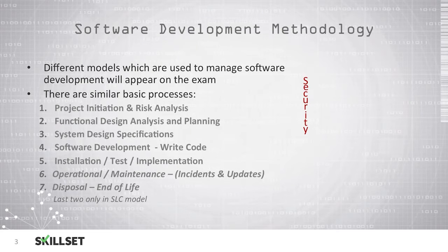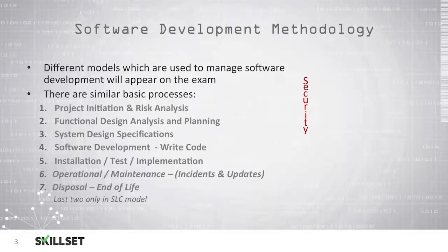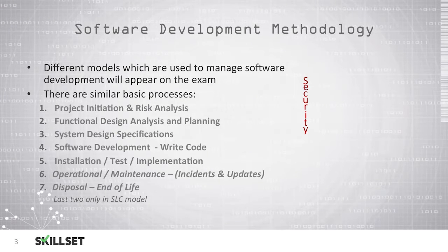There are several different models used to manage the software development process which will appear on the CISSP examination. All of these models have the same basic processes involved in them. They all begin with a project initiation phase, which is where a risk analysis must be conducted to determine any risks that may be involved in the process. The next phase is the functional design analysis and planning phase, where you determine the requirements for the system or software that you're designing.